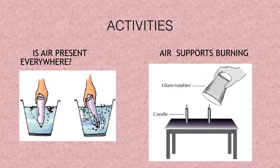The next activity shows that air supports burning. When you put an inverted glass over a burning candle, it will blow off after a few seconds. Why? Because you have cut off the supply of air. The oxygen present inside the air gets used up and no more oxygen is available for the candle to continue burning, so it stops burning.